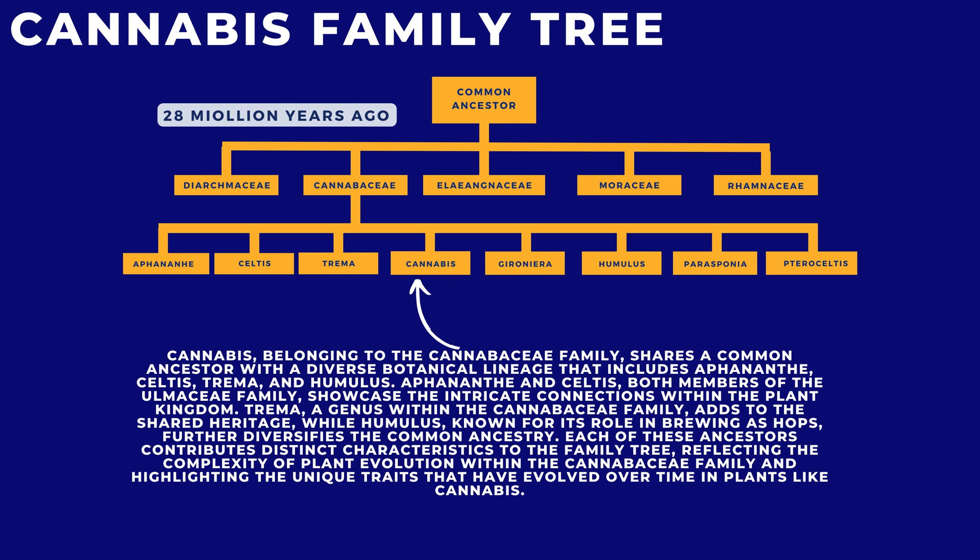Trema, a genus within the Cannabaceae family, adds to the shared heritage, while Humulus, known for its role in brewing as hops, further diversifies the common ancestry. Each of these ancestors contributes distinct characteristics to the family tree, reflecting the complexity of plant evolution within the Cannabaceae family, and highlighting the unique traits that have evolved over time in plants like cannabis.